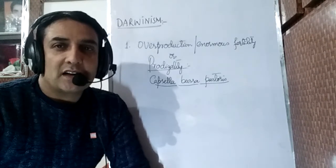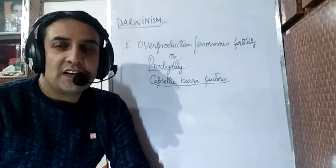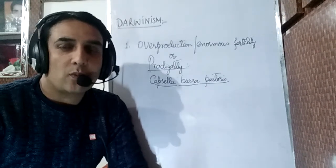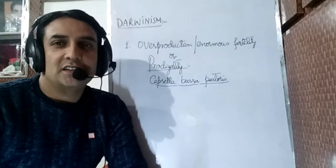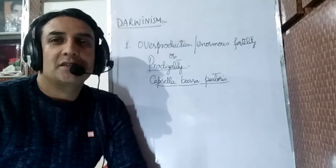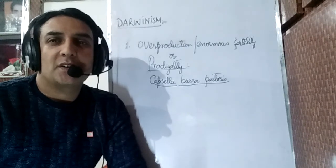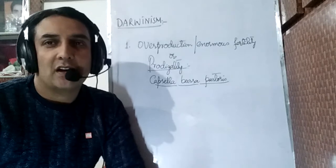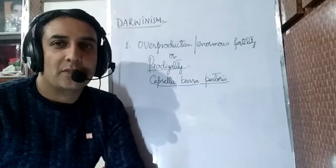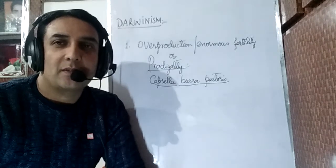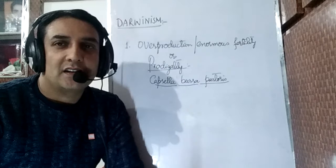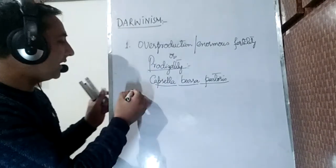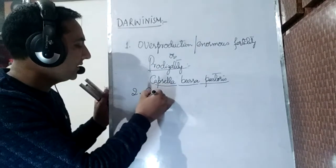The second point is competition. We shall discuss why all organisms do not survive — why all seeds released from a plant like Capsella are not viable, or even if they develop, not all attain adulthood. The second point in Darwin's theory is competition.